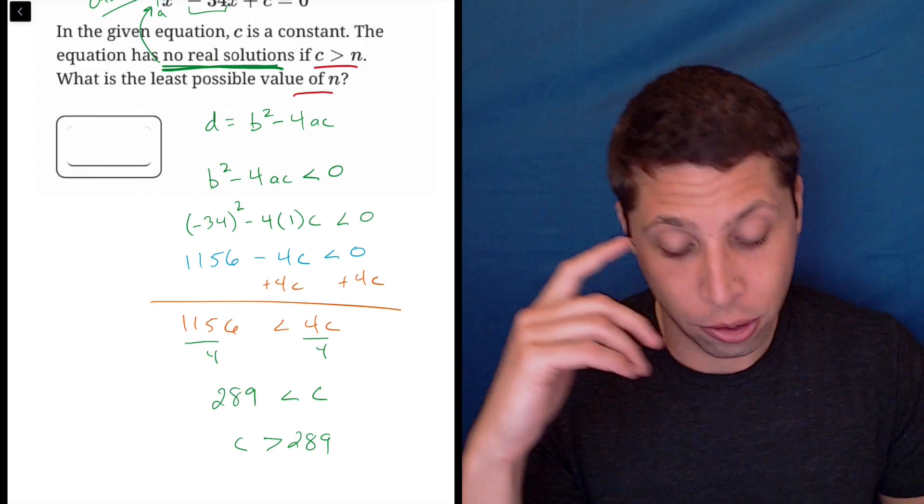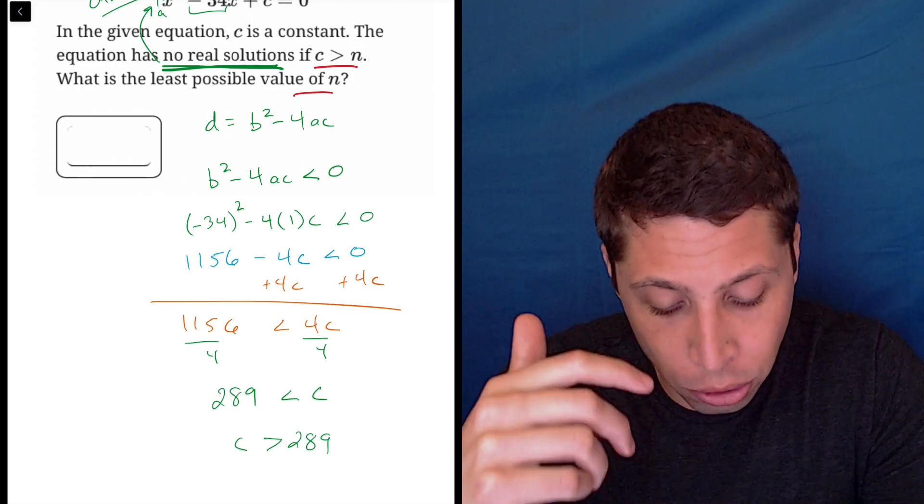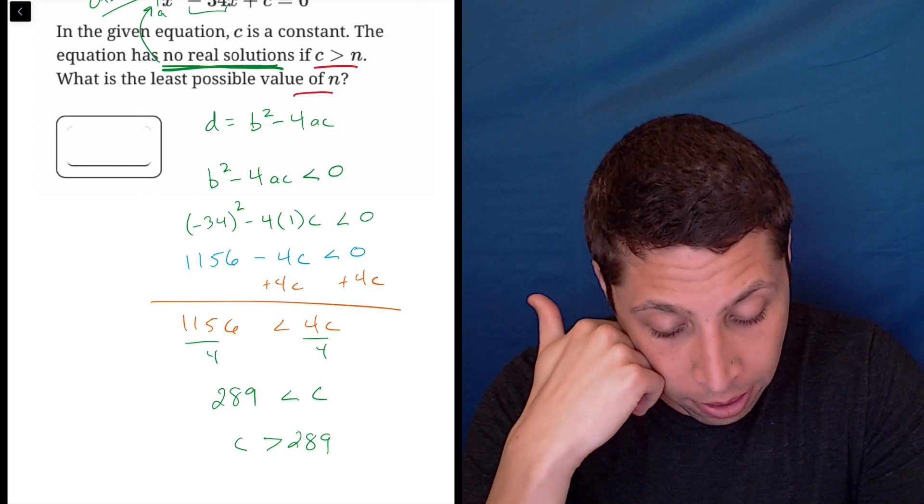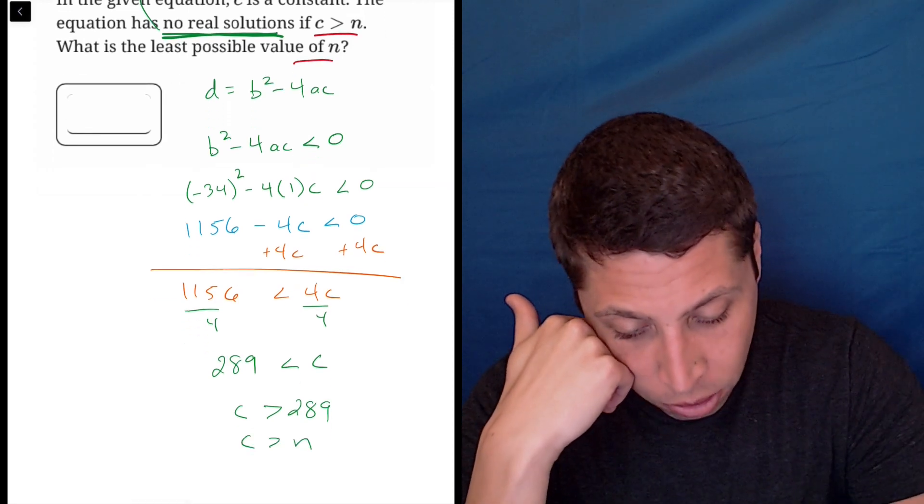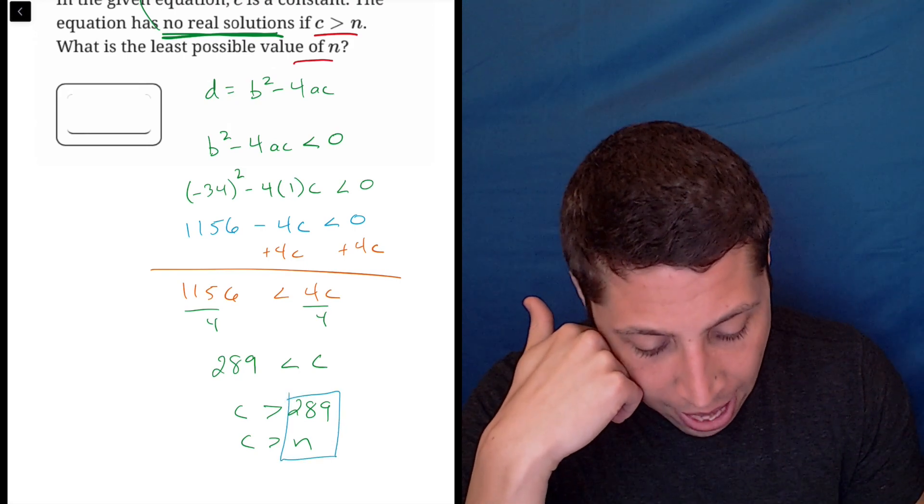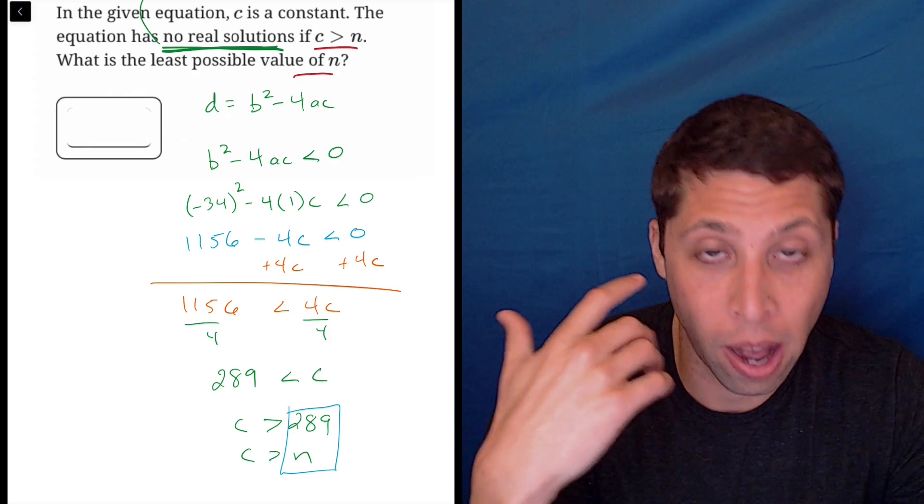So now let's go back to the actual question. The equation has no real solutions if c is greater than n. Well, okay, c is greater than n. So it kind of seems like the n is the 289.